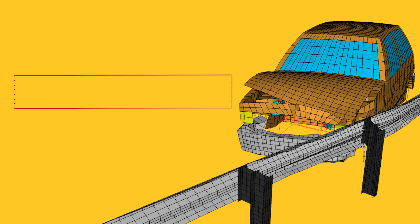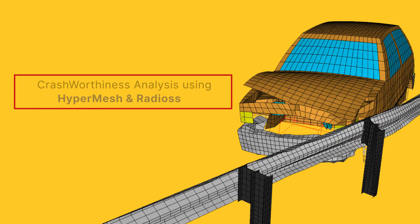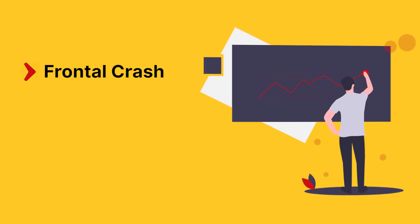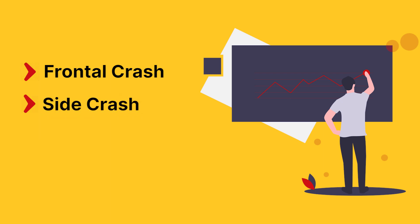The fourth course is Crashworthiness Analysis using HyperMesh and Radioss. This course teaches you how to do frontal crash analysis, side impact, rollover, and roof crush. These are the different simulations that industries look for when they hire crashworthiness engineers, and that is something you will be learning.